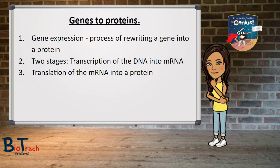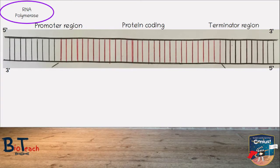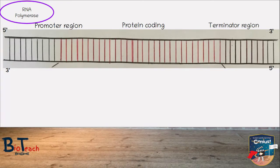The next thing to look at is genes to proteins. Gene expression is the process of rewriting a gene into a protein, involving transcription of DNA into mRNA and translation of the mRNA. The gene is bounded by a promoter region, also known as a start codon, which is upstream of the gene, and a terminator region downstream. These two regions control transcription by telling the enzyme RNA polymerase where to start and stop transcription. These certain triplet codes tell a cell when to start and stop production of a protein.